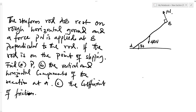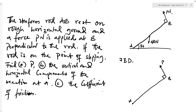Now to do this, we draw a free body diagram. Now let's draw. You have point A and point B, and there is a force here which is P, perpendicular at this point.